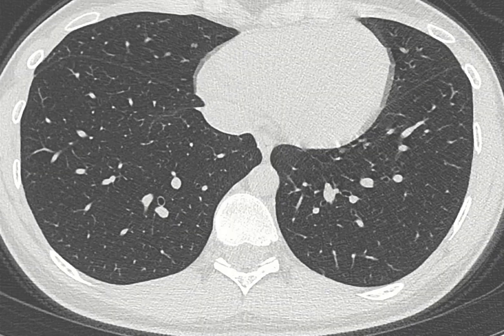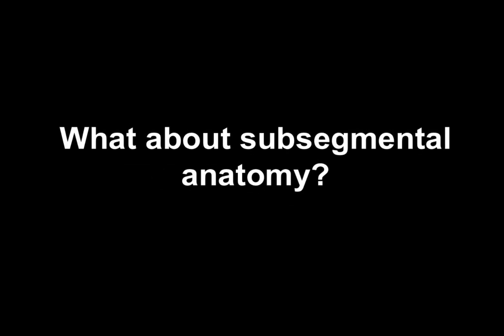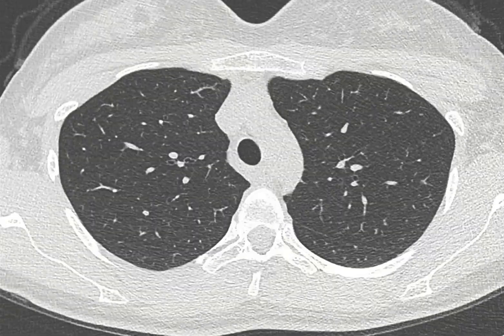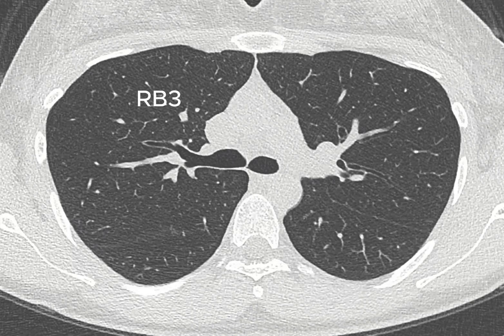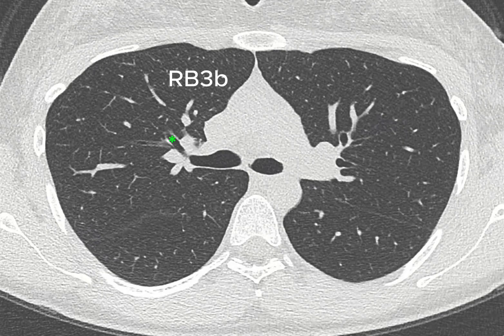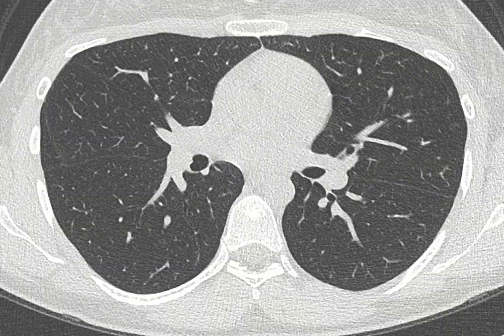Now we have seen all the segmental bronchi. You may wonder about subsegmental anatomy — sometimes you hear colleagues talking about RB3A and how to identify this on a CT scan. It's actually quite easy. For example, at the RB3 bifurcation, there is one branch in a more dorsal direction and one in a more anterior direction. The rule is that the dorsal one is the A and the ventral one is the B. This is the same on the left side — dorsal is A and ventral is B. That is practically all you need to know about subsegmental anatomy.